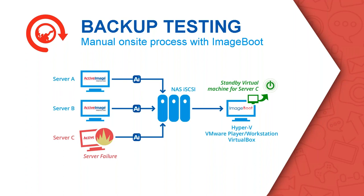With the image boot technology you can select one of the image files, boot it up, and check what the problem is so you are prepared before something goes wrong. You might learn, for example, that you need to disable a driver first or take care of a specific hypervisor compatibility issue. With the automatic boot check and this manual verification after a failure, you know exactly what's wrong. It doesn't take long — you just choose the image from a NAS for example, and run it on a normal working machine. You don't need the same server, the same memory, or the same performance — just a machine able to run the image boot software.